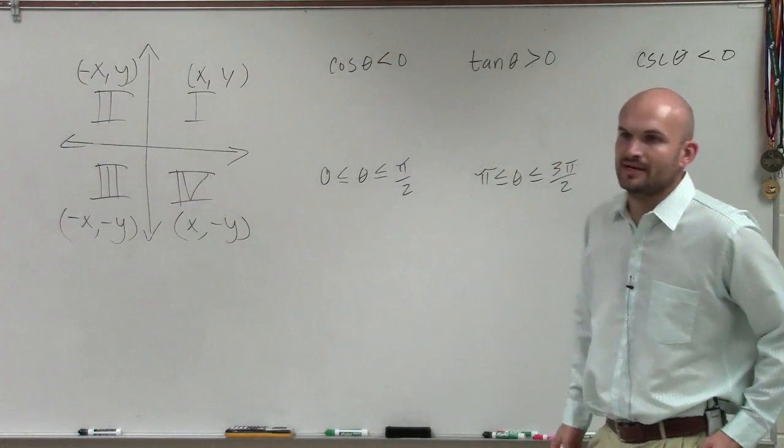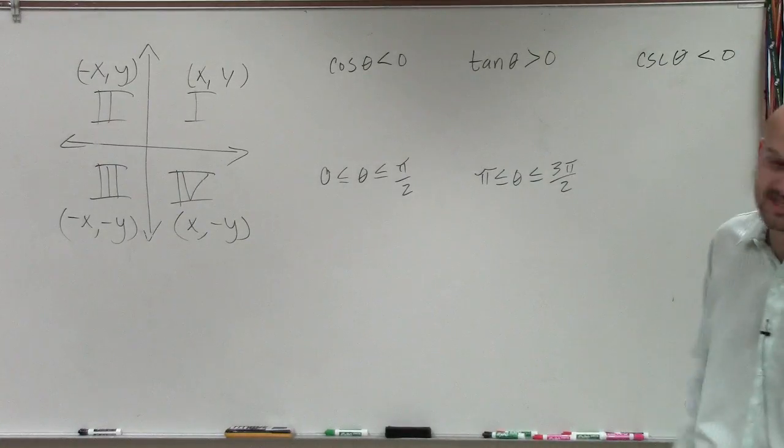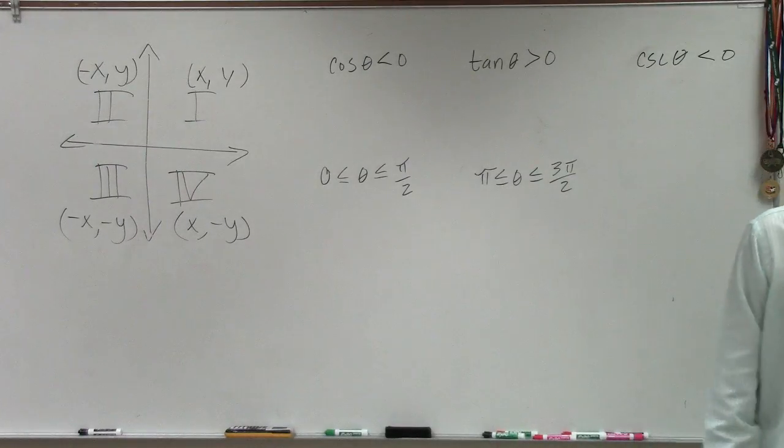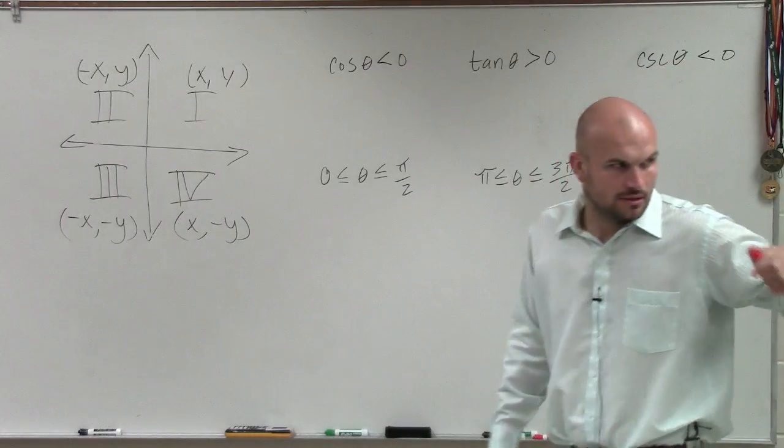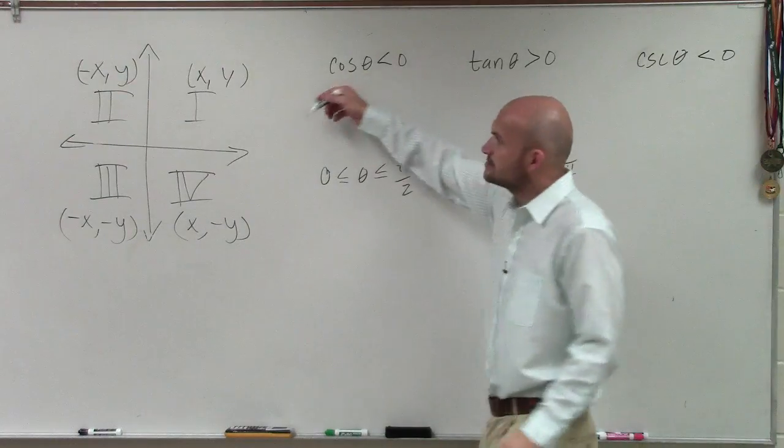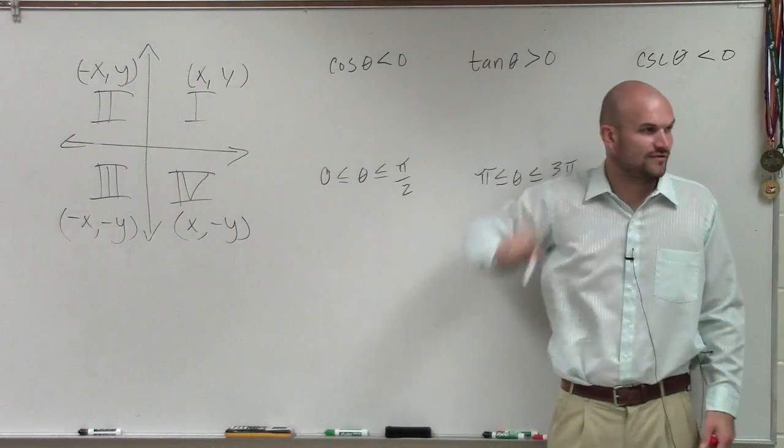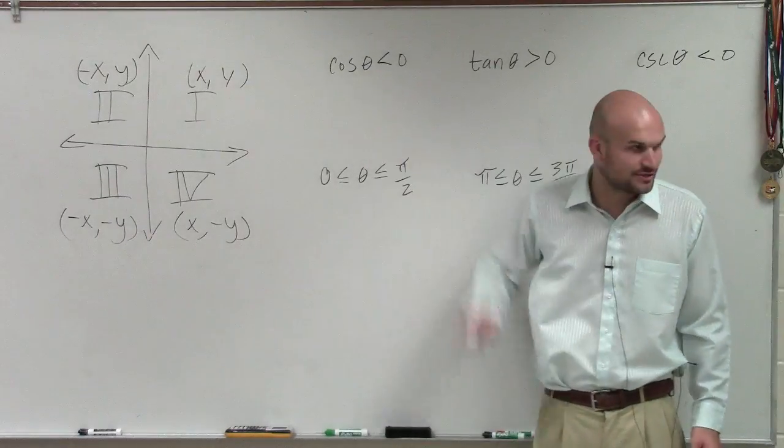So if I say there's a constraint, where would it be? And I say the cosine of theta is less than zero. So cosine, Aaron, represents what coordinate? On the unit circle, cosine represents the x. So when is the x coordinate negative, or when is it less than zero? So it has to be negative. What two quadrants, or three, four, or one?